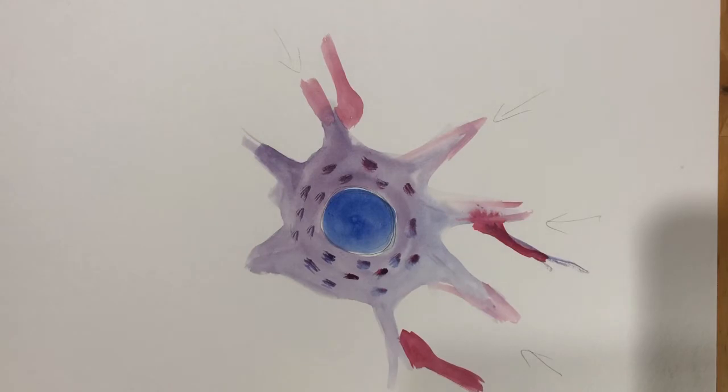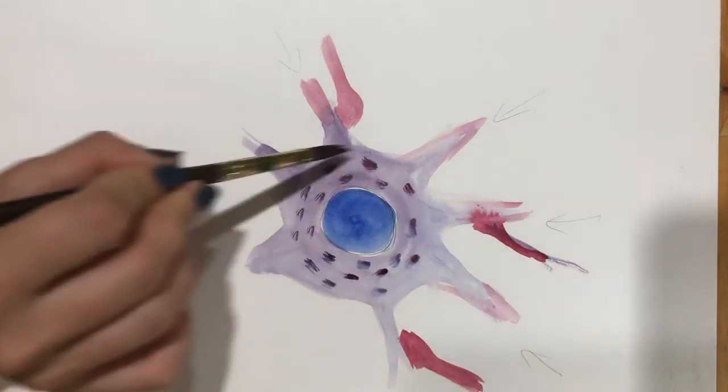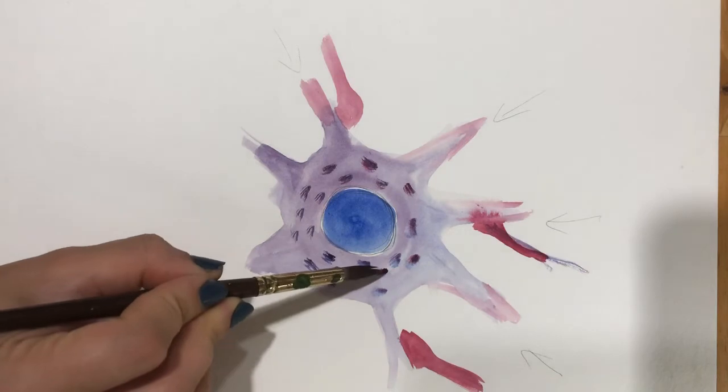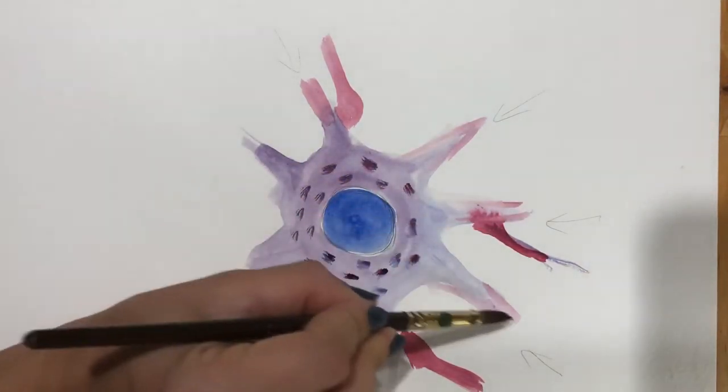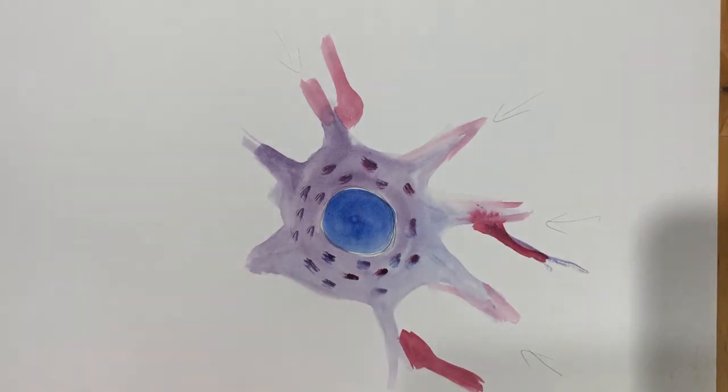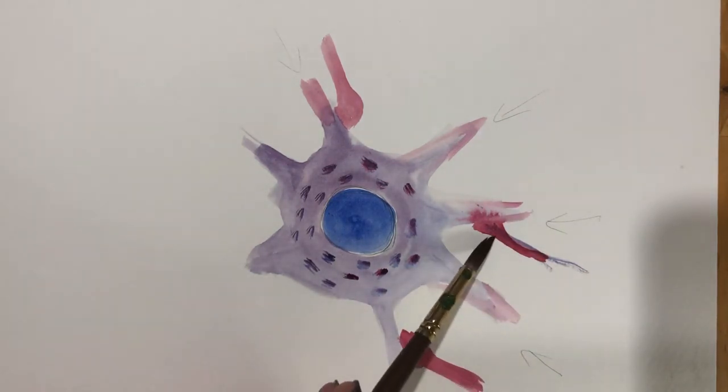So up to now, we've drawn the cell body of a neuron, the Nissl bodies, the nucleus, the short branching dendrites, and the axon terminals of other neurons that have come and attached to these dendrites.